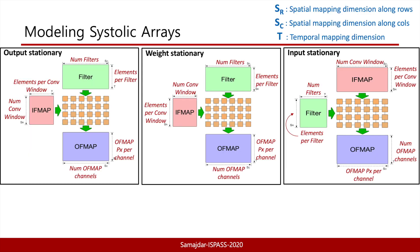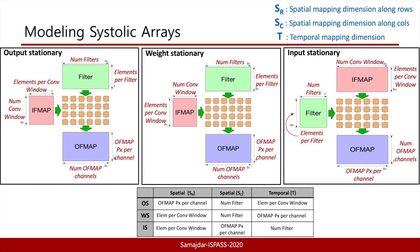With the assumptions and terminology in place, we can now describe the details of the model. In this slide we see the three possible mappings of a convolution operation as a GEMM on a systolic array. A systolic array has two spatial dimensions — one along the row and one along the column, denoted by SR and SC. The third dimension is time, denoted by T. In this table we show the allocation of various parameters along these spatial and temporal dimensions for the three mapping strategies.